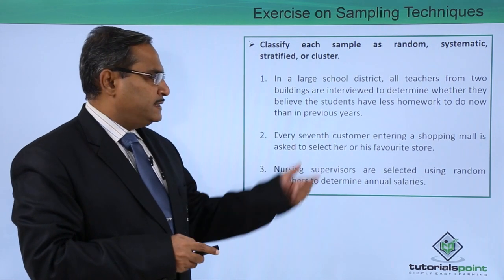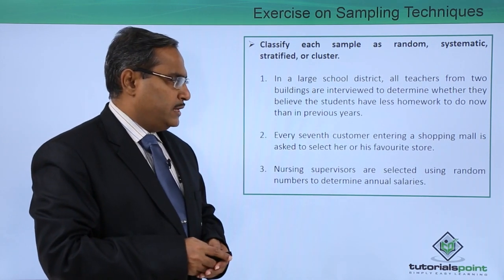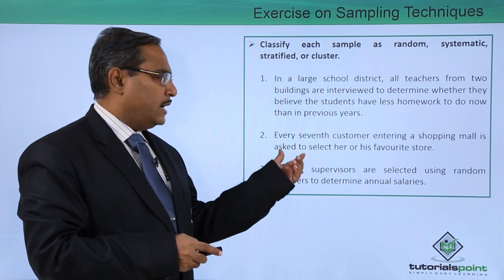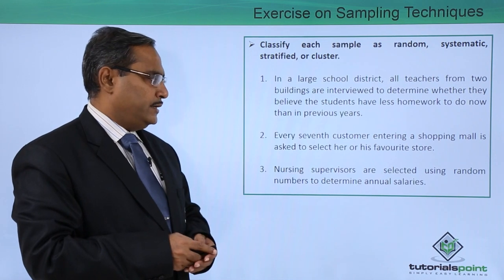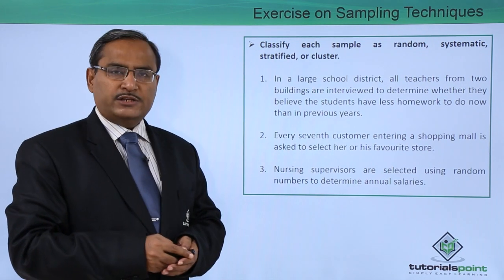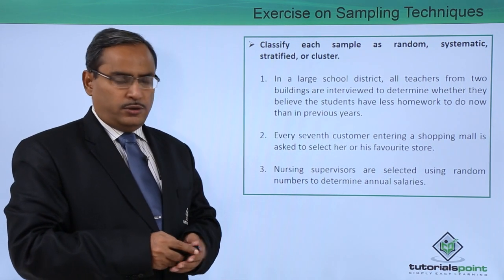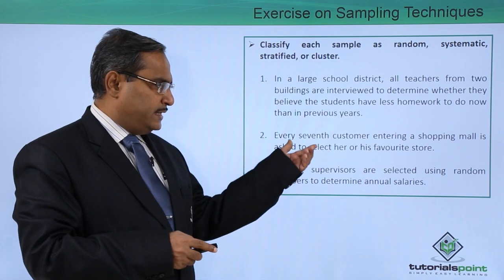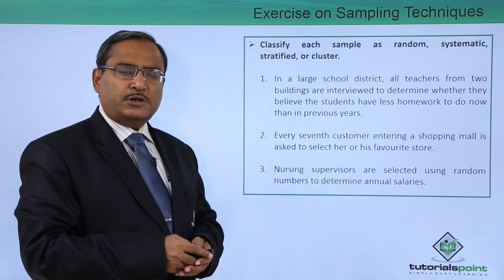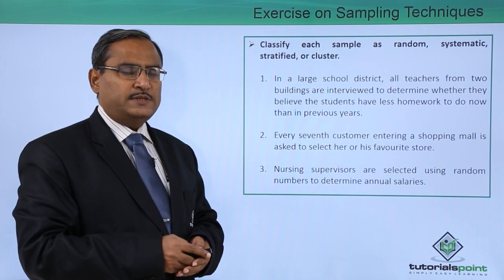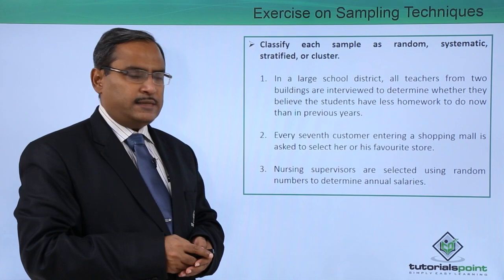Every seventh customer entering a shopping mall is asked to select his or her favorite store. Since we are going for every seventh customer, we can consider this a good example of systematic sampling.